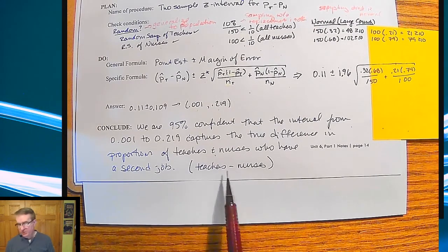And again, we did teachers minus nurses. All right. So that's it for chapter eight, or for some of us, part, most of chapter eight and a little bit of chapter 10. But regardless, this is the first part of Unit 6, Confidence Intervals for Proportions.